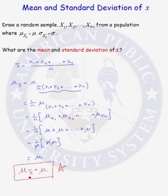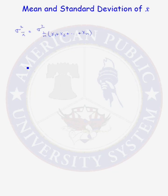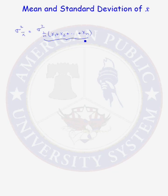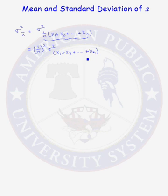Now let's compute the standard deviation of our sample mean. To get the standard deviation of x-bar, we first compute the variance of x-bar and then take the square root. The variance of the sample mean equals the variance of 1 over n times the sum of all our random variables. Using the property of linear combinations for variance, this equals 1 over n quantity squared times the variance of the sum. Assuming that our random variables are independent, this equals 1 over n squared times the variance of x1 plus the variance of x2 plus the variance of xn.